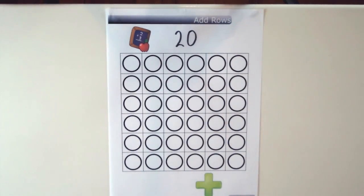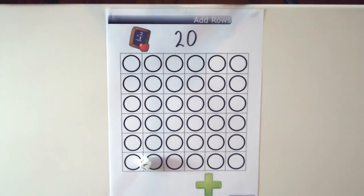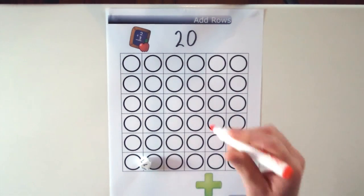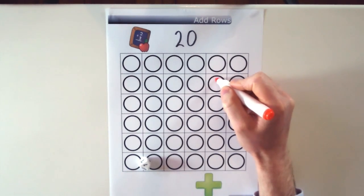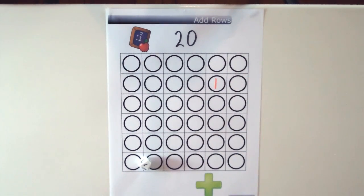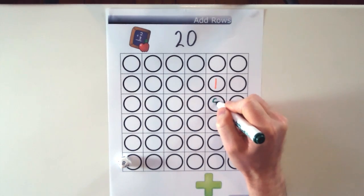So then players take turns rolling the die and orange has rolled a 1 so they pick any of the circles and put a 1 in it. Then greens turn and they've rolled an 8 so they can put an 8 there.